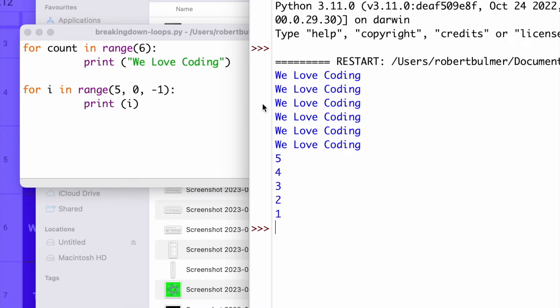We've got the for count in range. So if I run this and run the module, as you can see, we love coding is repeated six times based on this for count in range six. And then, based on this one, for i in range, it starts at five, and it's going to count down to zero in increments of minus one. So it's going to go five, four, three, two, one. So it's printing i, it's printing everything in this range, in these parentheses.